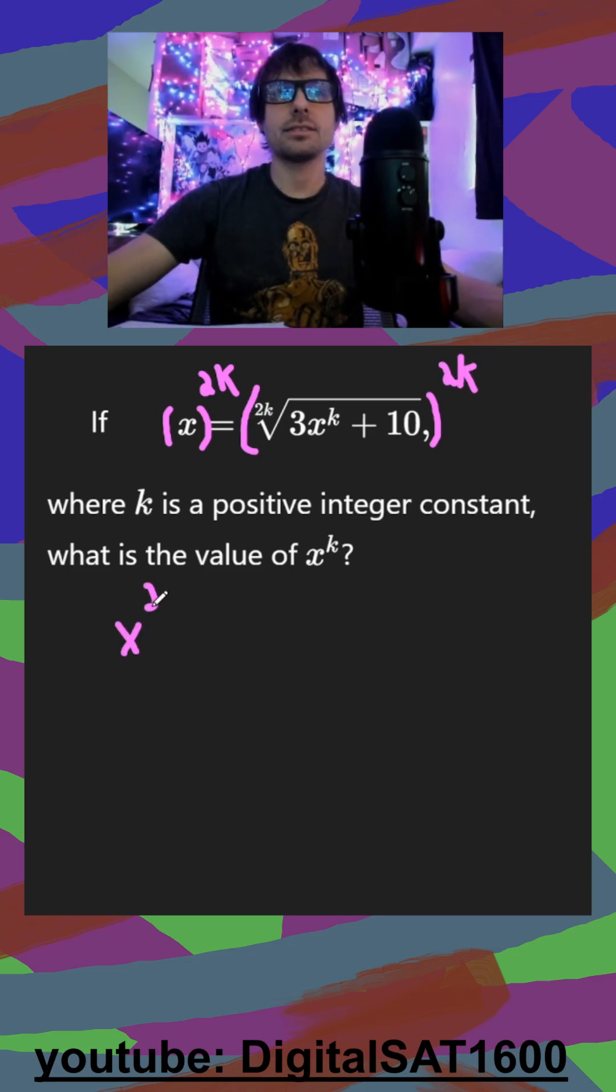Our left side becomes x to the 2k. And then our radical, whenever you raise it to whatever your radical number is there, it cancels out. So this is just equal to 3x to the k plus 10.